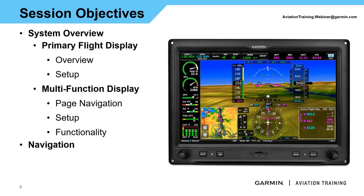For a basic overview of today: we're going to start with a basic system overview, going through the primary flight display, some setup options, and some shortcut items that will make your flying more enjoyable. We'll do a pretty deep dive into the MFD or multifunction display, starting with page navigation — using touchscreens as well as the dual concentric knobs — going into MFD setup on different pages, and how to get the most out of the platform based on what's critical and what information you want to see.